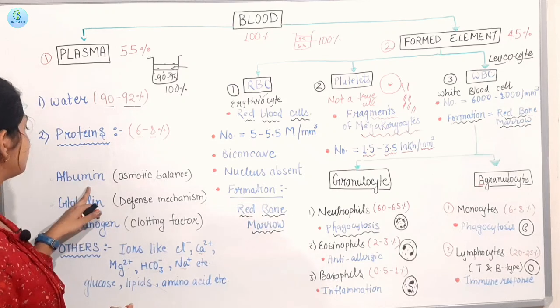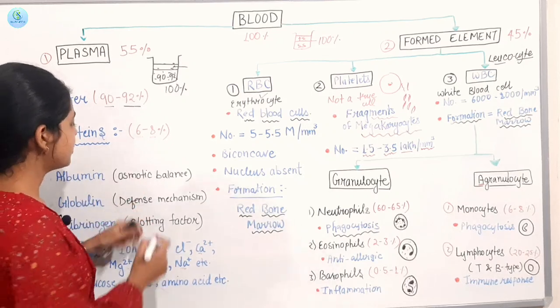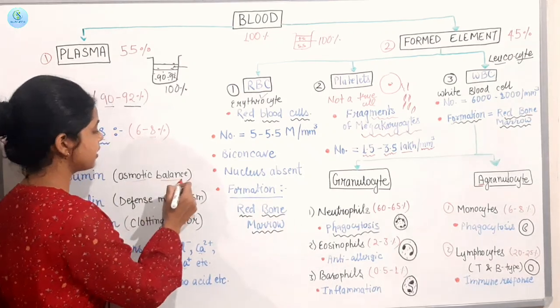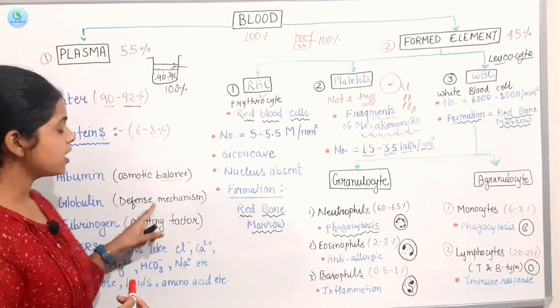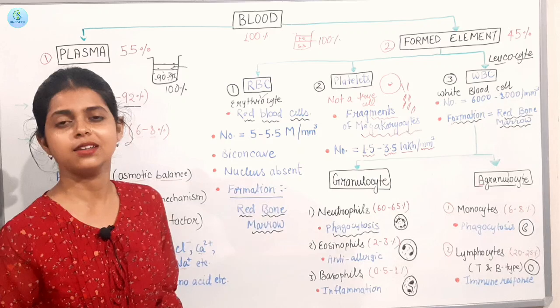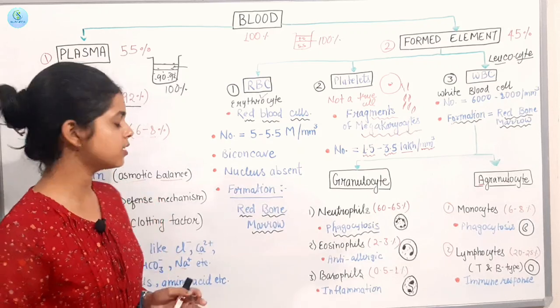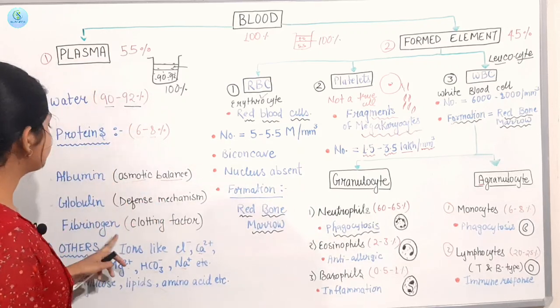This is albumin protein, which helps you with osmotic balance. The second protein is globulin, which is in the defense mechanism. It works for immunity. The third is our fibrinogen.